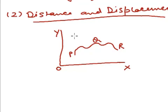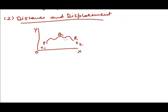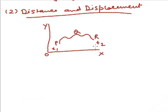This graph shows an object is at position P at time t1 and at position R at time t2. In the time interval from t1 to t2, particle has traveled path PQR and length of the path PQR is the distance traveled by the object in the time interval t1 to t2.